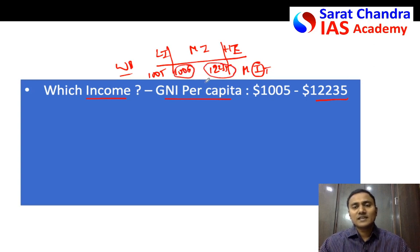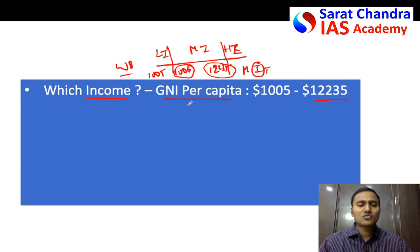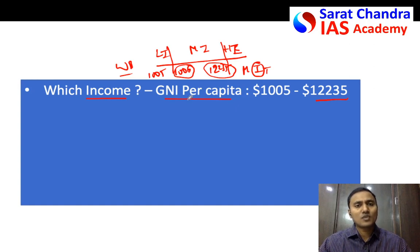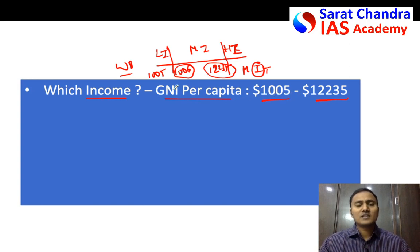Generally in economy answers, if you can provide some numbers or statistics, it will be better. But if you don't remember, it's okay — you can just explain the concept without using any numbers. In the real scenario when you write the answer, you definitely cannot use as many numbers as we explain in class. This statistic about gross national income per capita is an important one to remember.